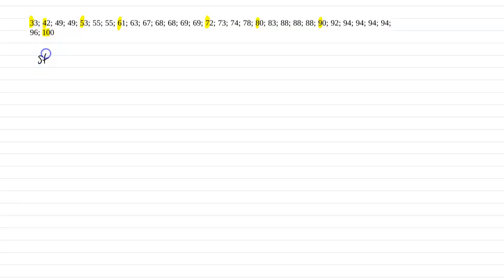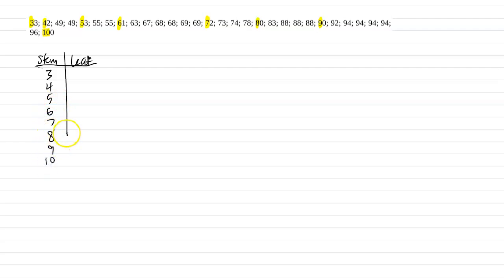The stem is on the left column, and then the leaf lists all the units for each stem. For the 30s, we only have one data value — 33 — so the leaf is 3. For the 40s, we have three data values: 42, 49, and 49, so the leaves are 2, 9, and 9. We go through this process for all rows, filling in all the different leaves.